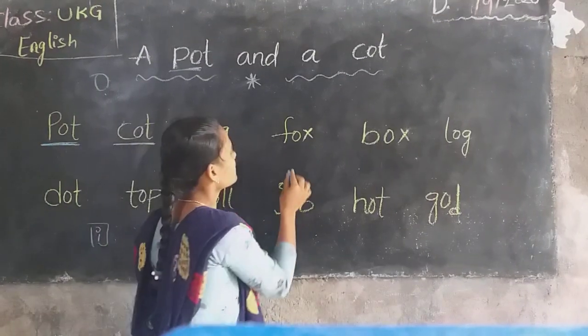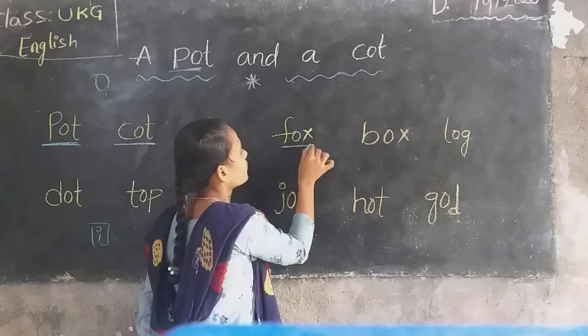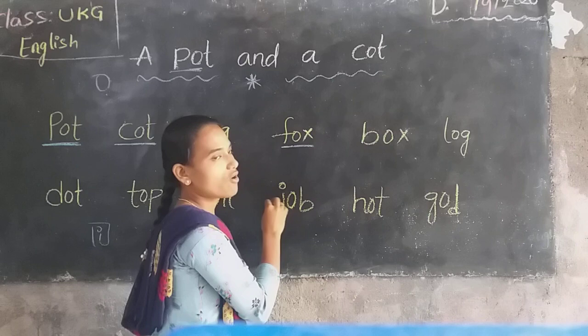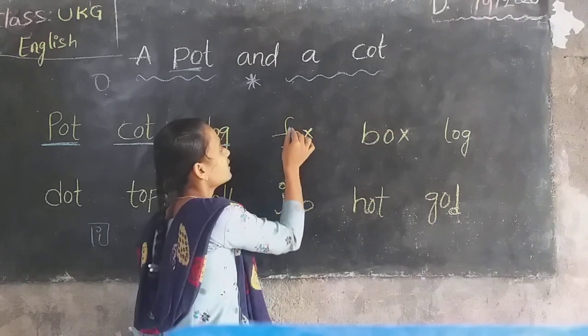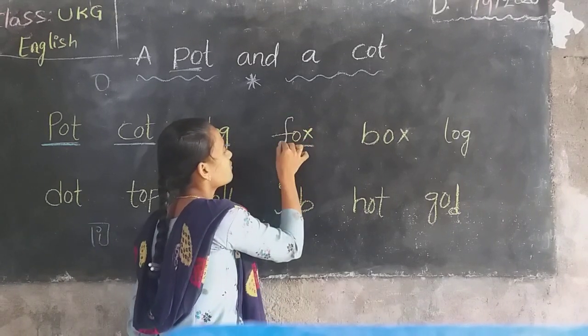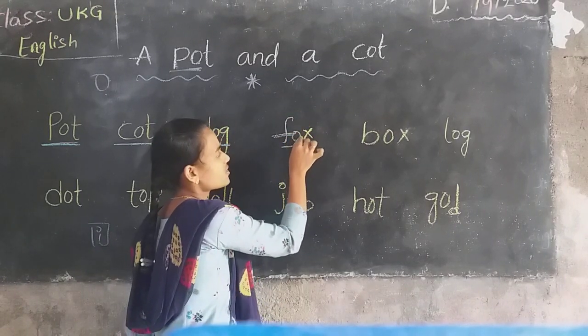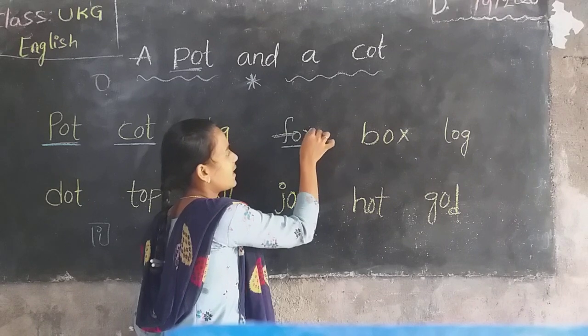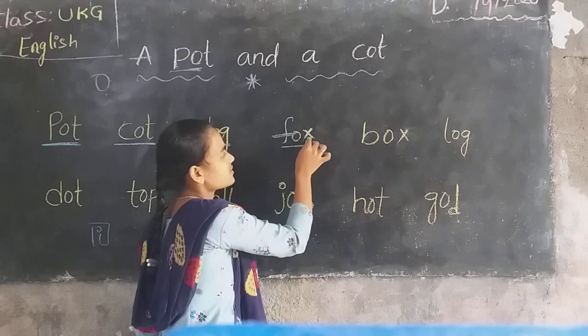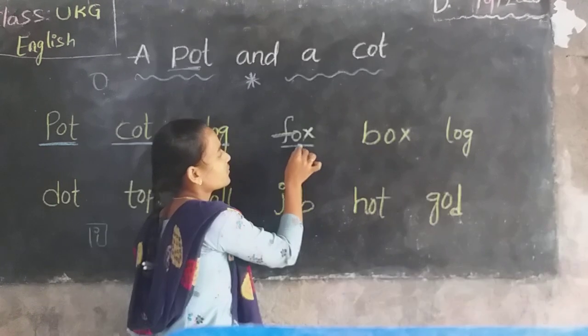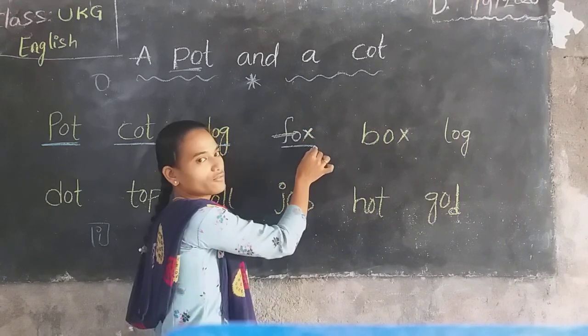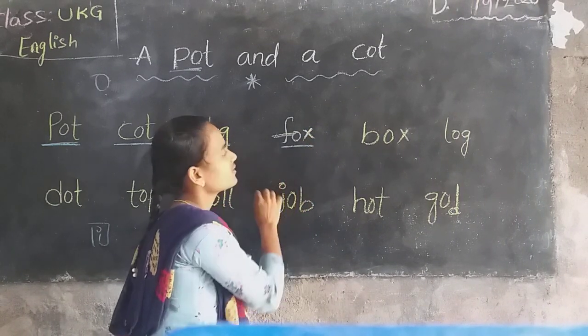Next, F-O-X, fox. Here, the sound of F is F. Next, O sound, O. Next, X sound. F-O-X, fox.